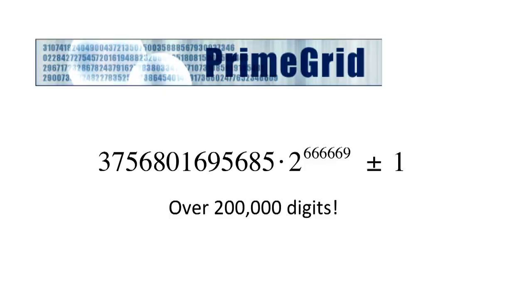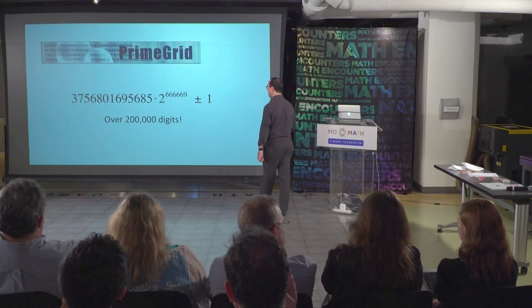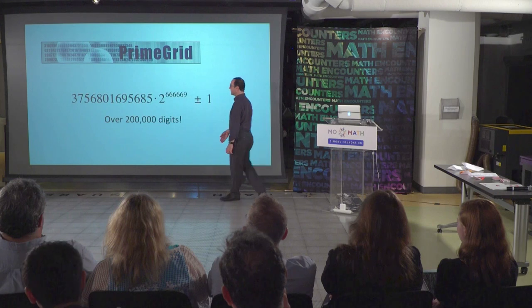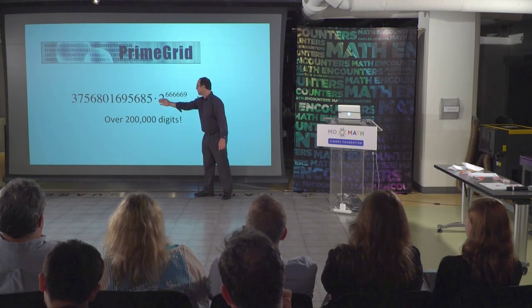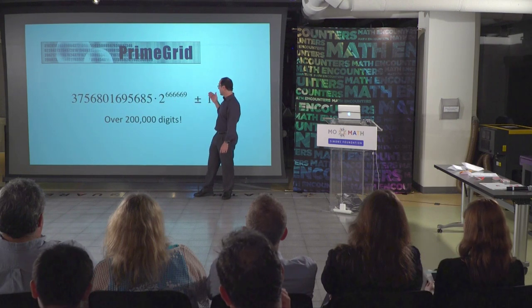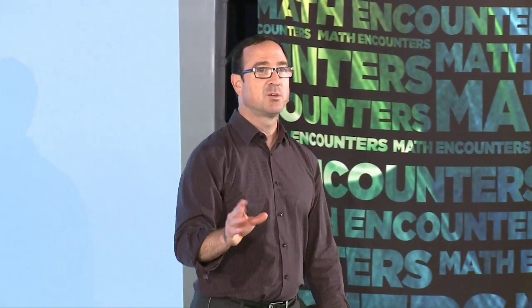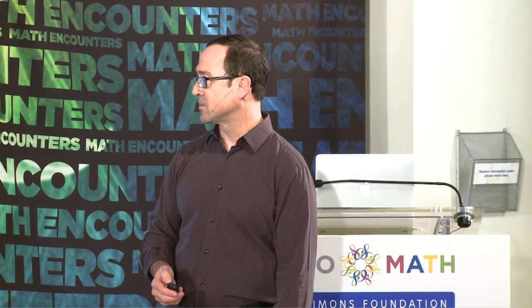These twin primes — we don't know if there are infinitely many of them or not. But primes are very important. They form the basis of modern cryptography, that is, the science of making and breaking secret codes. Cryptography is used every day when you buy something on the Internet. You need that Internet security so that somebody doesn't walk off with your credit card information. And it's all based on large prime numbers.